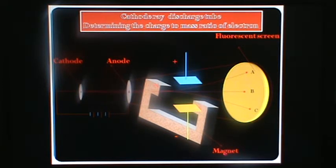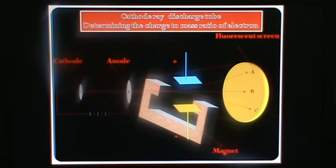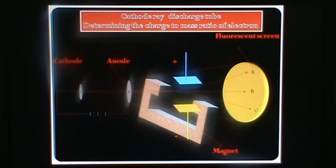You see, all the spots are now visible. The B spot appears when both magnetic and electrical fields are absent. The A spot appears when only the electrical field is present. The C spot appears when the magnetic field is applied.